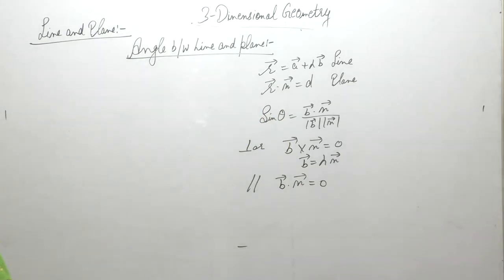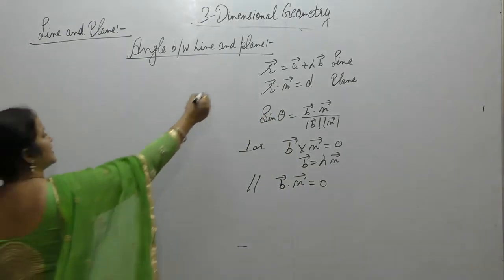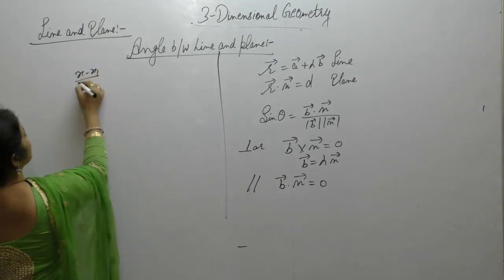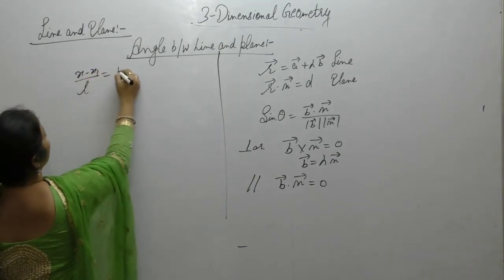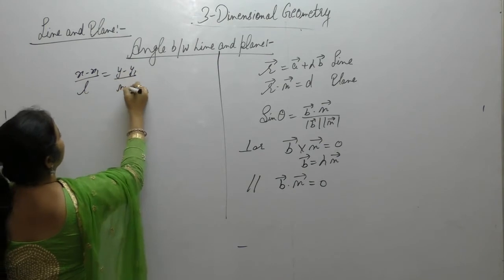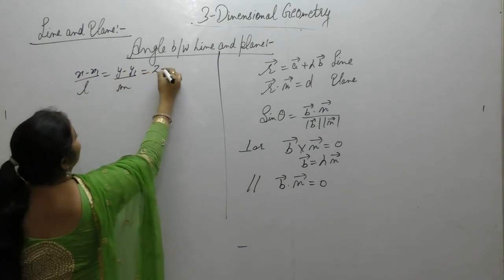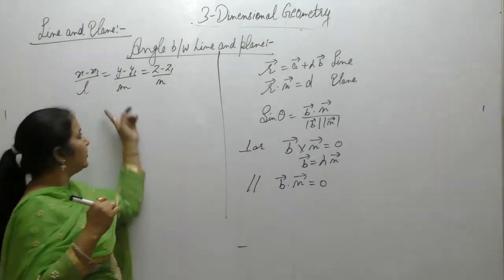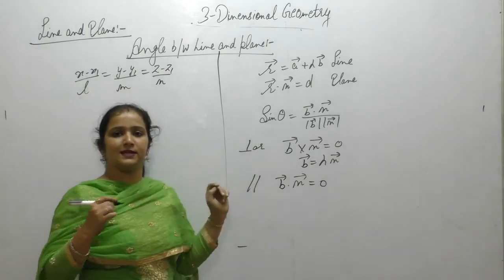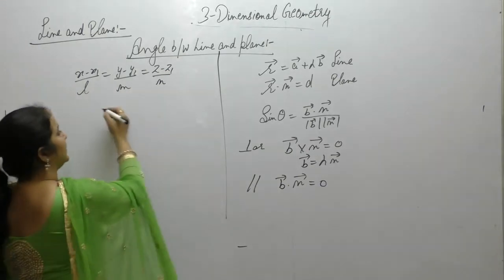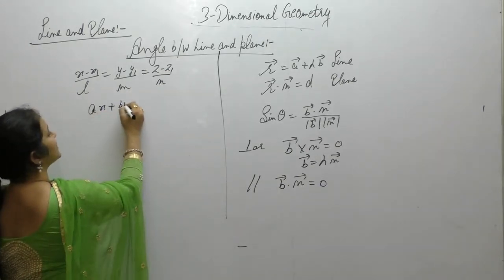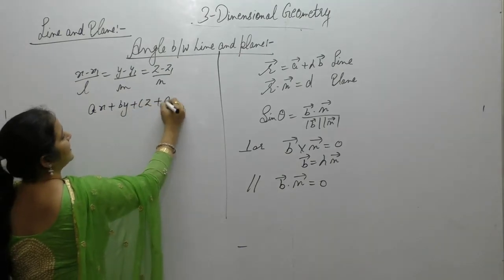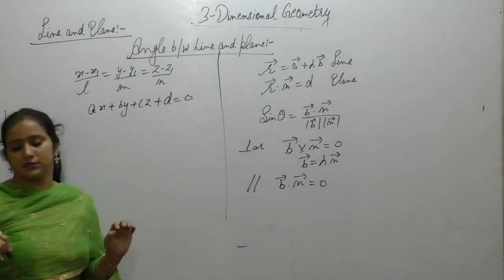Now if the Cartesian form is given, the Cartesian form of the line is (x − x₁)/l = (y − y₁)/m = (z − z₁)/n. Here we use l, m, n instead of a, b, c because the general equation of the plane is ax + by + cz + d = 0.